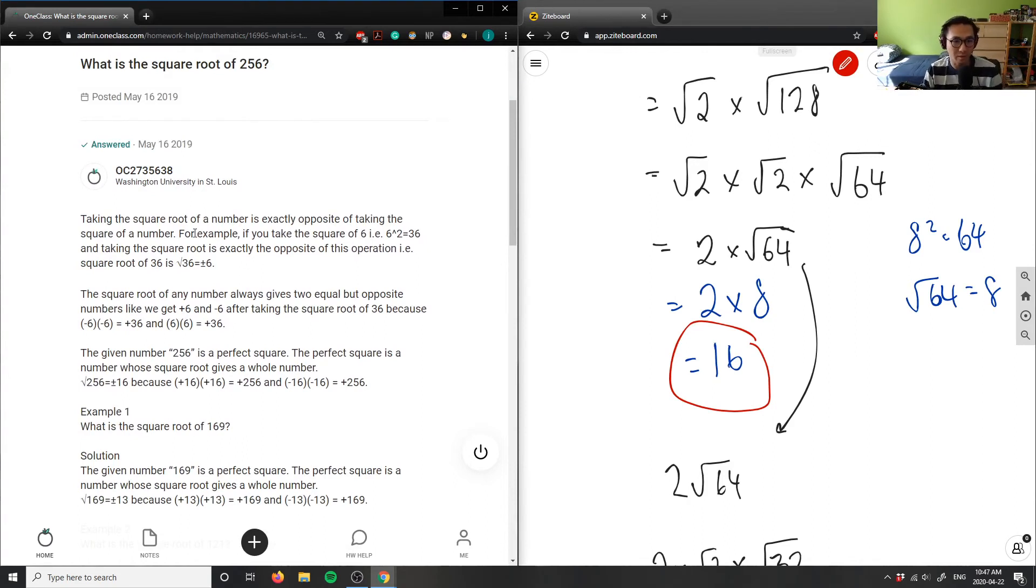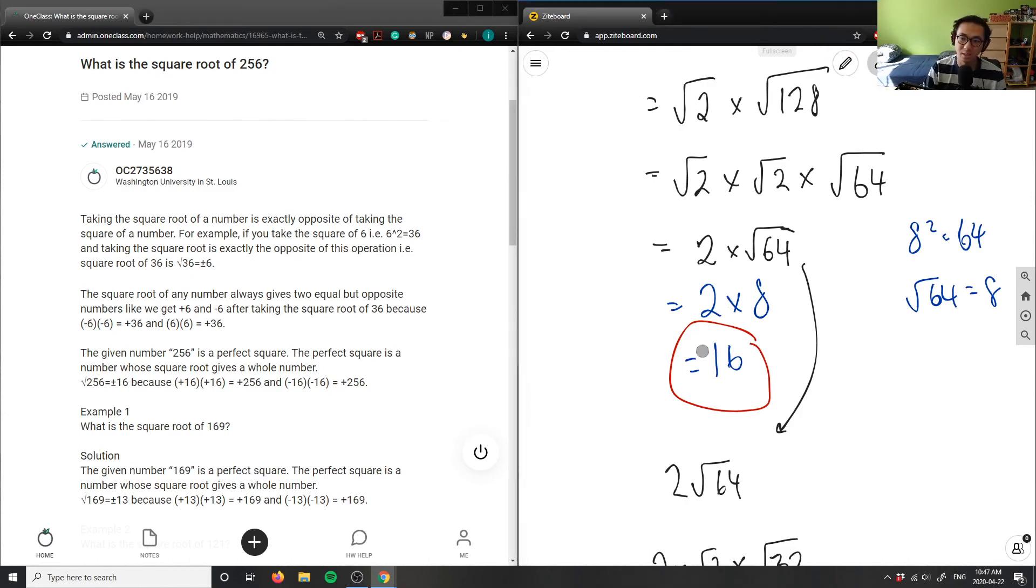Opposite of taking the square of the number. That's good. And then what they do is the given number 256 is a perfect square. A perfect square is a number whose square root gives a whole number. This here is actually plus or minus 16 if you want to be really specific, so let me write that down. It's actually plus minus 16 here.